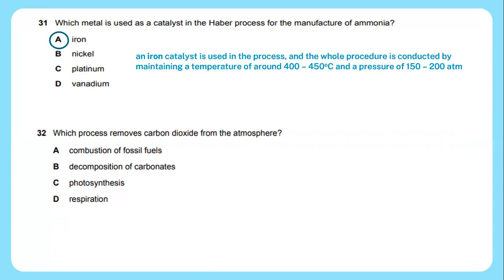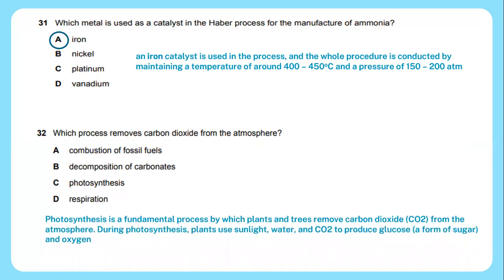Question 32: Which process removes carbon dioxide from the atmosphere? Photosynthesis is a fundamental process by which plants and green algae remove carbon dioxide from the atmosphere. During photosynthesis, plants use sunlight, water and carbon dioxide to produce glucose, a form of sugar, and oxygen. The answer will be photosynthesis.